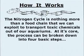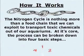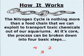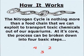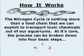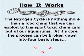How It Works. The nitrogen cycle is nothing more than a food chain that we can exploit to transport toxic chemicals out of our aquariums. At its core, the nitrogen cycle can be broken down into four simple stages.